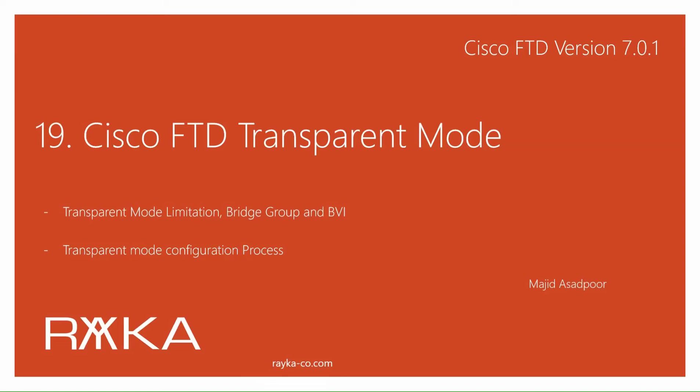Cisco FTD transparent mode is another way of inserting a firewall in the network. In transparent mode, FTD is mostly like a switch and does not need an IP address assigned to each interface, and also does not take part in network routing.